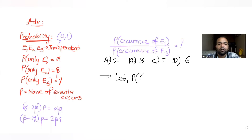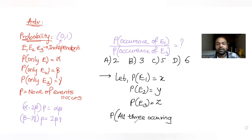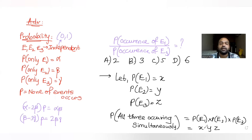Let's say probability of occurrence of E1 is x, probability of occurrence of E2 is y, and probability of occurrence of E3 is z. We have been told that E1, E2, and E3 are independent, so the probability of all three occurring simultaneously is simply x times y times z, since we can just multiply the individual probabilities for independent events.